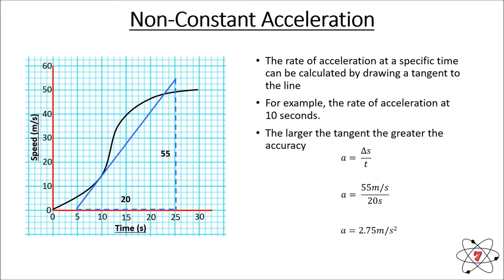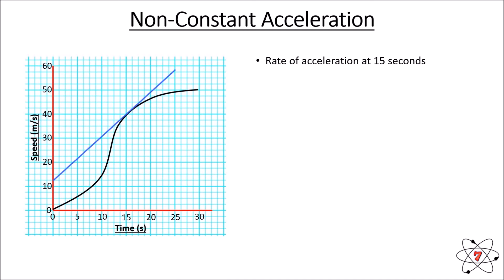It's important to note that the rate of acceleration calculated from a tangent is only valid for the point where you've drawn it. Because the rate of acceleration is changing, the angle of the tangent will also change at different points on the graph. For example, at 15 seconds: the change in time is 25 seconds and the change in speed is 45 metres per second, giving acceleration of 45 divided by 25 = 1.8 metres per second squared. We can see the rate of acceleration at 15 seconds is different from the rate at 10 seconds, because the gradient of the line differs at those times.